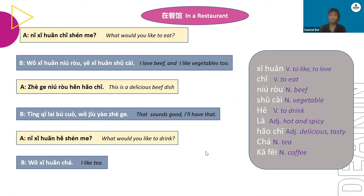Please repeat after me. 你喜欢吃什么? 我喜欢牛肉。 也喜欢蔬菜。 这个牛肉很好吃。 听起来不错。 我就要这个。 你喜欢喝什么? 我喜欢茶。 Or you can say 我喜欢咖啡.